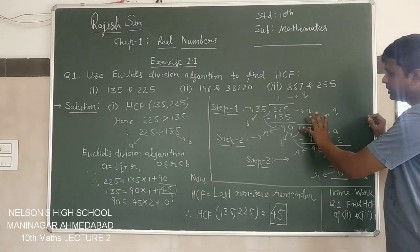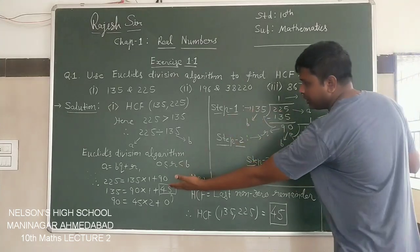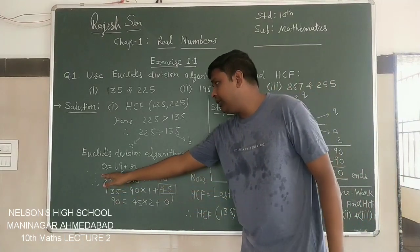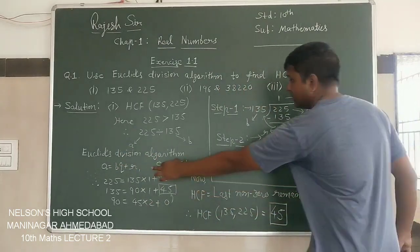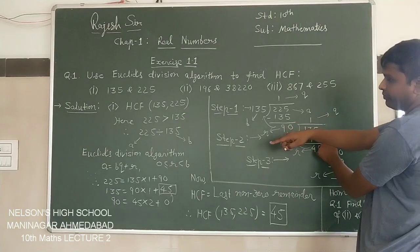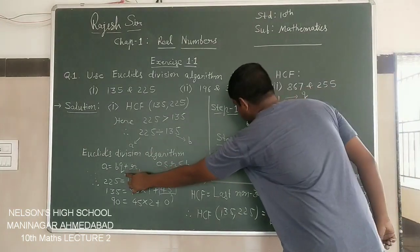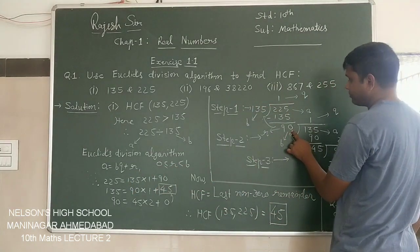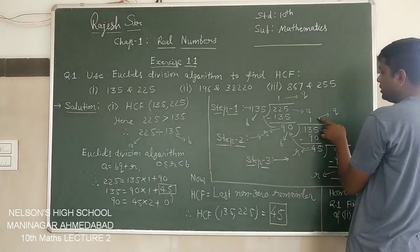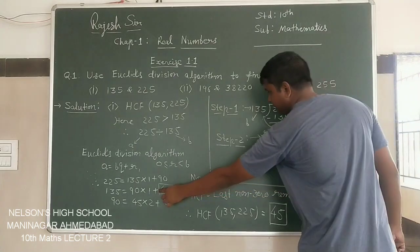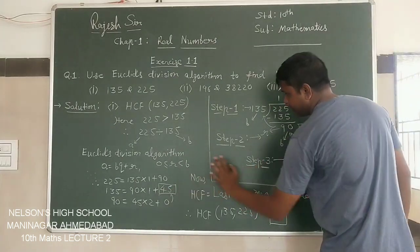135 minus 90, subtracting, 5 minus 0 is 5, 3 minus 9 is... we get 45. So the quotient is 1, we denote it as Q, and the remainder is 45, we denote it as R in second step. This will be here: in second step, A is 135 equals B is 90 into Q is 1 plus R is 45.